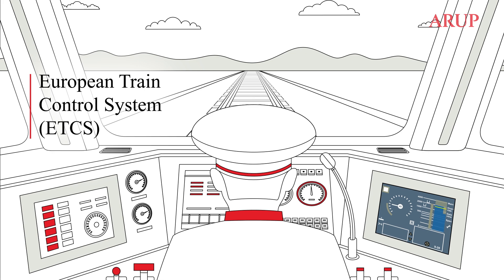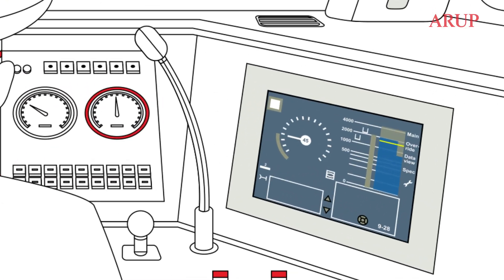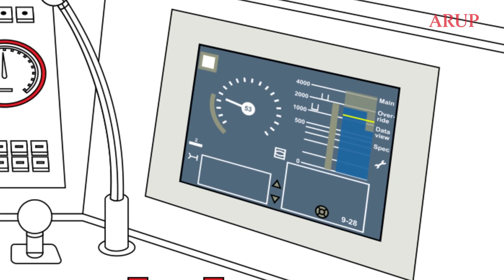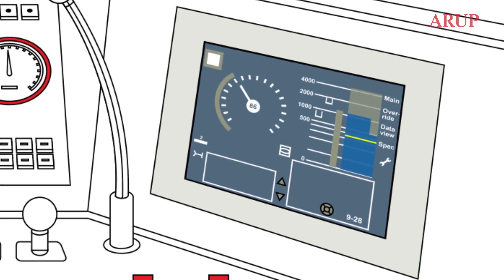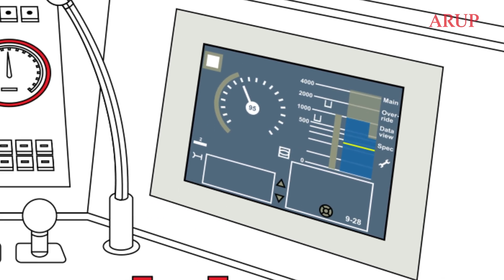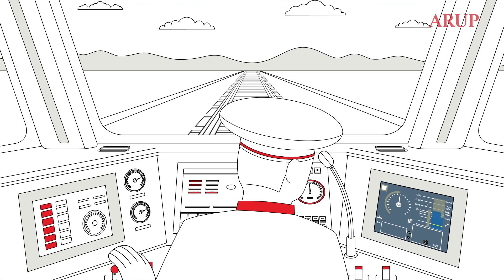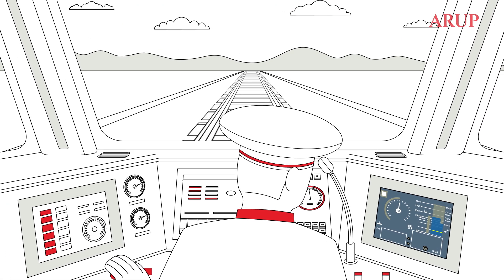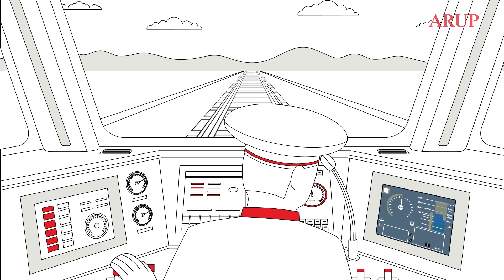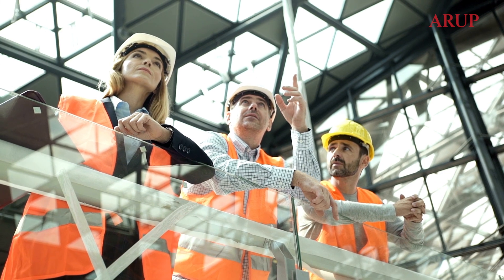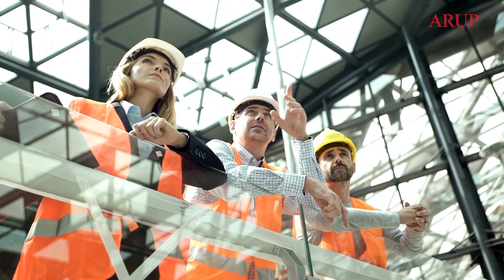Such as the European Train Control System, ETCS. These modern signaling systems provide drivers with signaling information through a dynamic display inside the cab. Traditional design tools cannot simulate or visualize the effects of the train's speed or position on what the driver will actually see and respond to. We wanted to improve the way this key element of rail design is done.